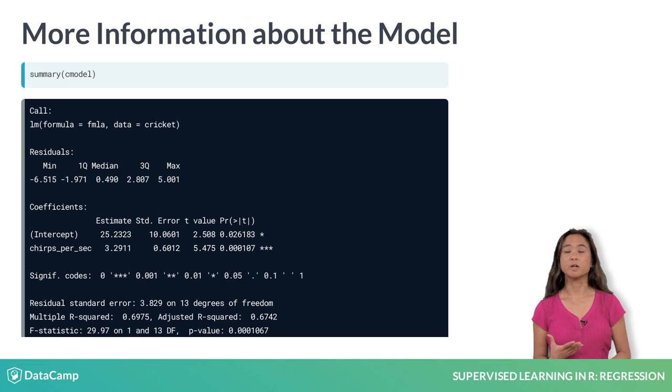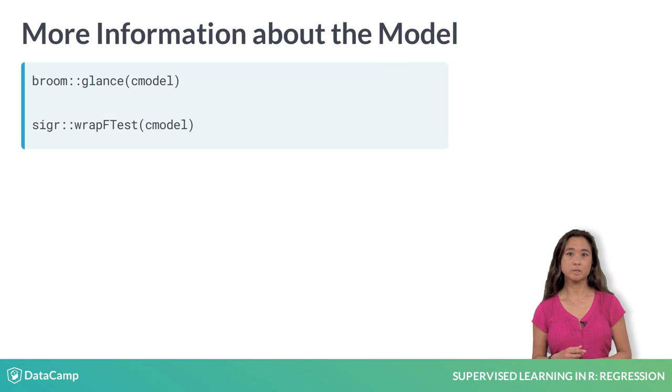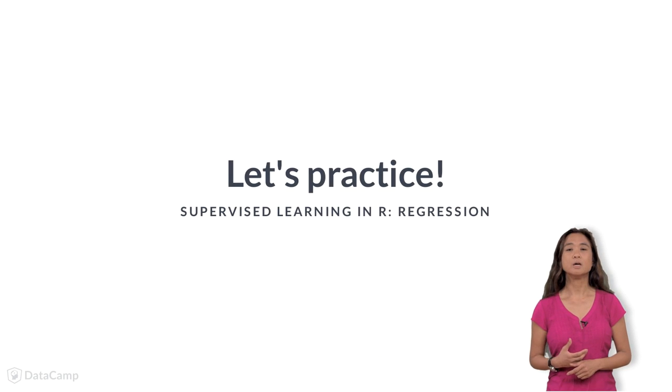You can get the model diagnostics by calling summary on the model. Summary includes not only the values of the coefficients, but the standard error in their estimated value, along with other diagnostics. We will cover some of these diagnostics in a later chapter, but for now, just know that they are available. To get these diagnostics conveniently packaged in a data frame, use the glance function from the package broom. For the R-squared diagnostic, you can also use the function wrapFtest from the package sigr. Now let's do some exercises to review what you've learned.